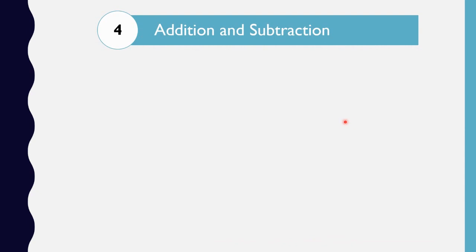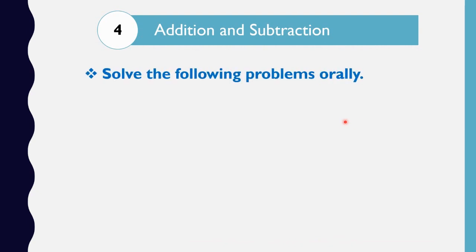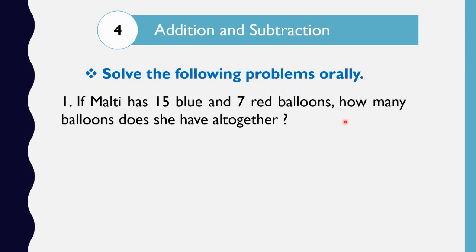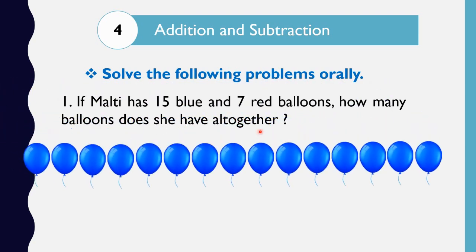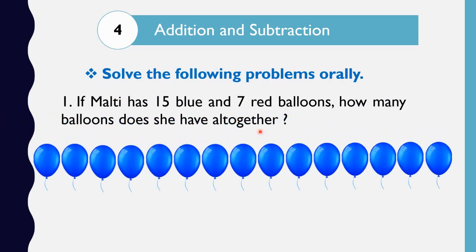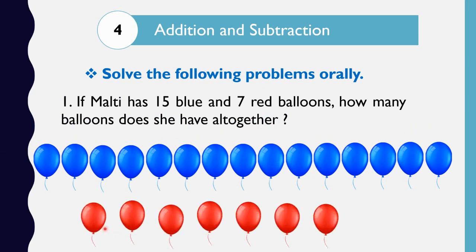Next is addition and subtraction — solve the following problems orally. Here we don't have to arrange them in their place values. The first one is: if Malti has 15 blue and 7 red balloons, how many balloons does she have altogether?